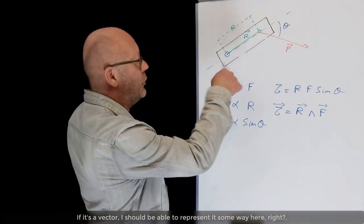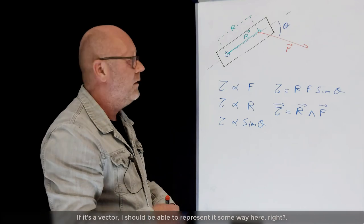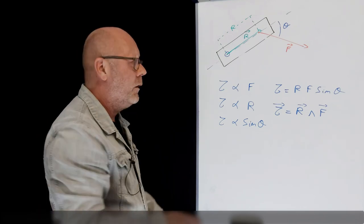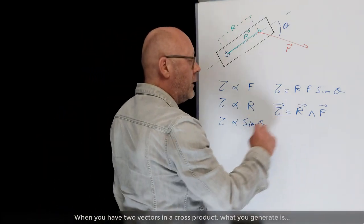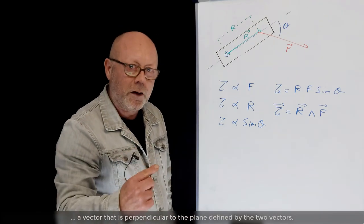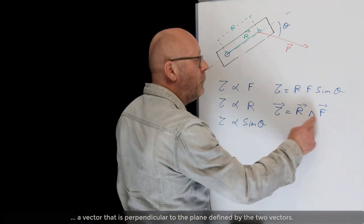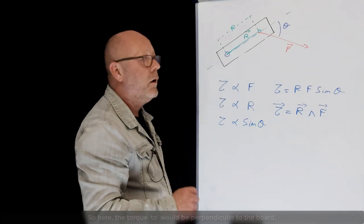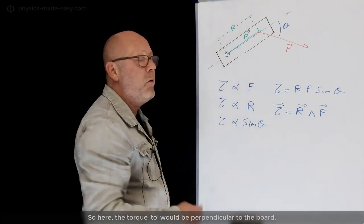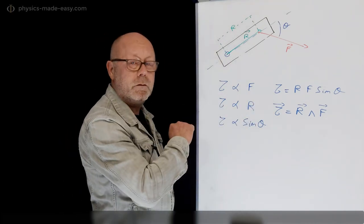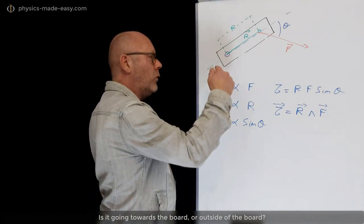If it's a vector, I should be able to represent it somewhere here, right? Well, I can. When you have two vectors in a cross product, what you generate is a vector which is perpendicular to the plane defined by these two vectors. So here, the torque would be perpendicular to the board. Is it going towards the board or outside the board?